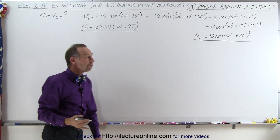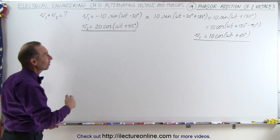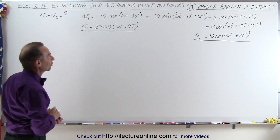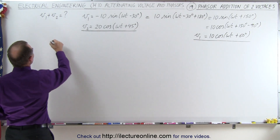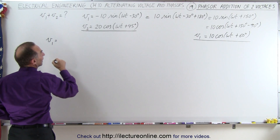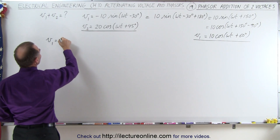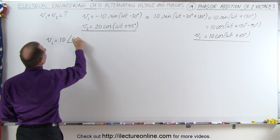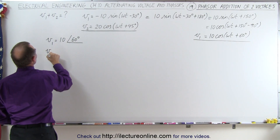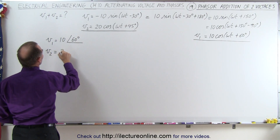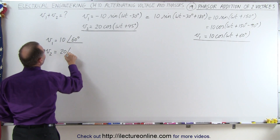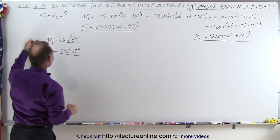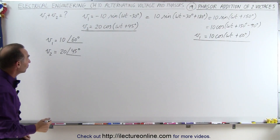Now we can convert them to the magnitude-phase format — the phasor format. V1 can be written as magnitude 10 at a phase angle of positive 60 degrees. And V2 is equal to magnitude 20 at a phase angle of 45 degrees. That is the phasor format of the two voltages.